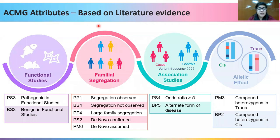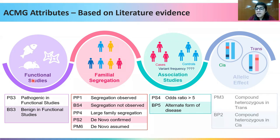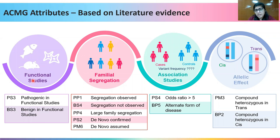ACMG attributes based on literature evidence take into account functional studies, familial segregation, association studies, as well as the alternate form of disease and the allelic effect of variations in case of compound heterozygosity. Let's understand the key considerations associated with each of these criteria one by one.